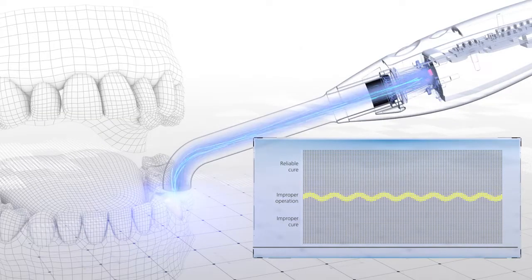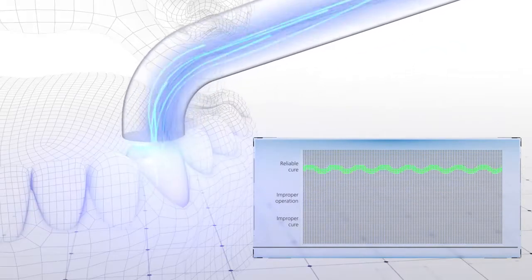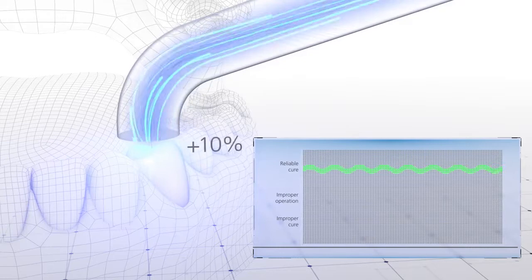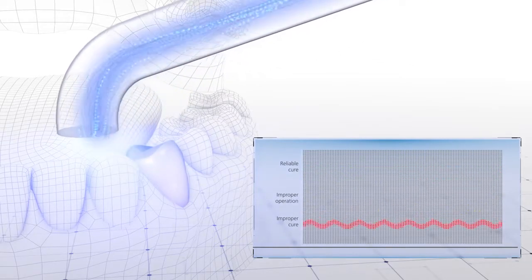The curing unit will vibrate to alert the user about the improper operation and the curing time will automatically be extended by 10% if the movement may prevent the material from curing properly.